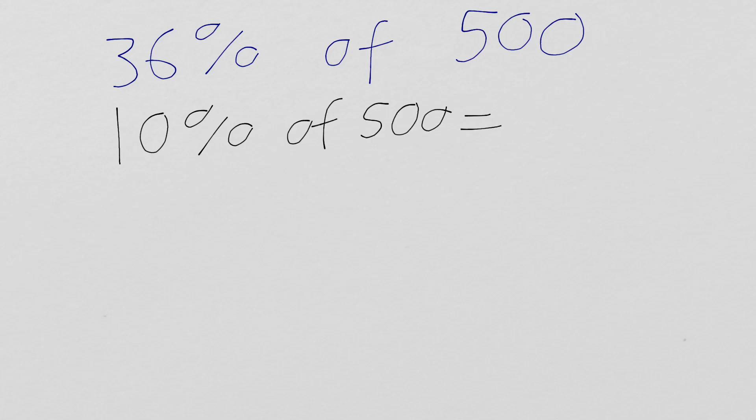Remember the rule. Can you remember what the rule was of finding 10%? That's right. Divide it by 10. So, 500 divided by 10 is 50.